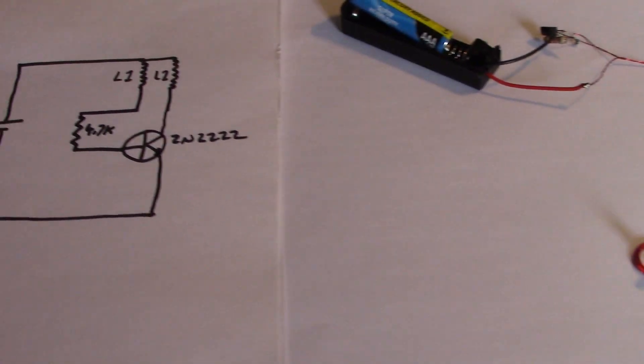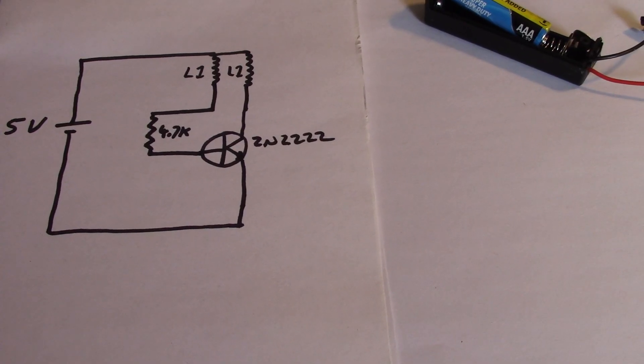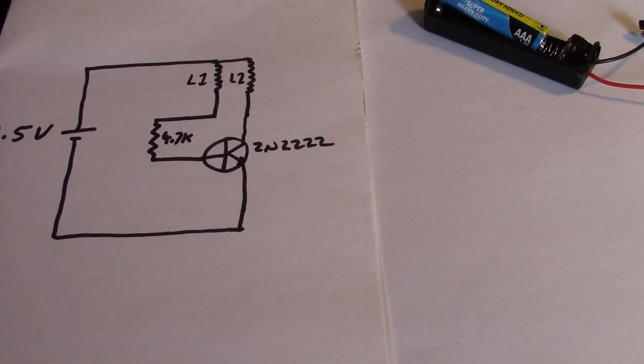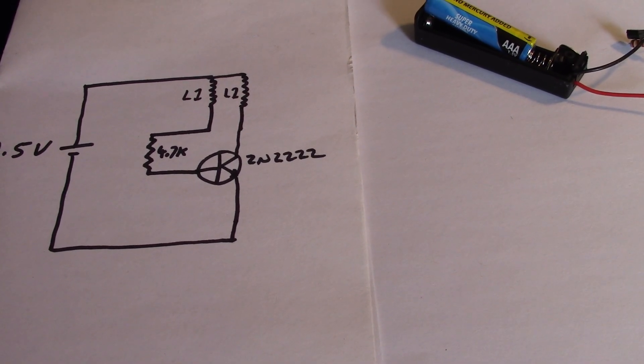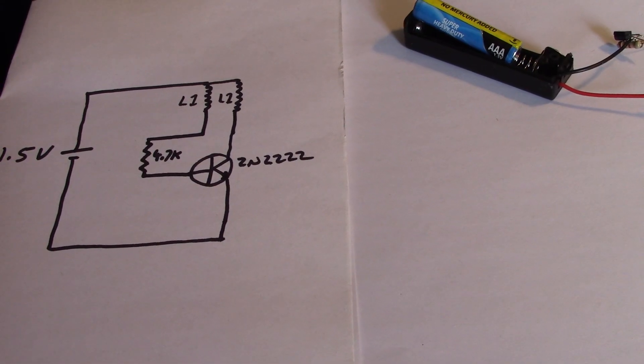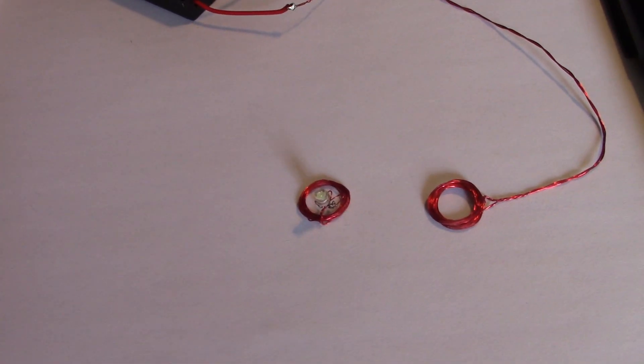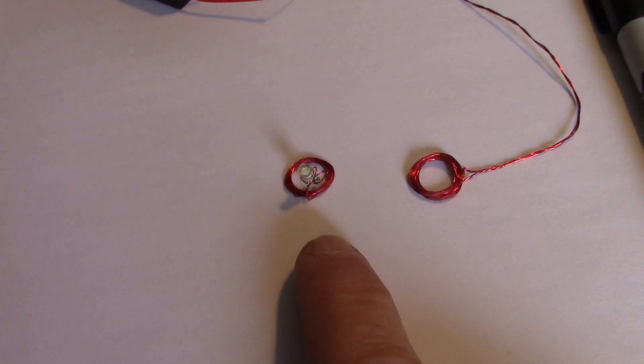In this case, here's the very simple circuit, and I've got 12 turns center tap and 12 turns for the driving coil, L1 and L2 on that diagram, and I've just got 12 turns for the little receiving coil.